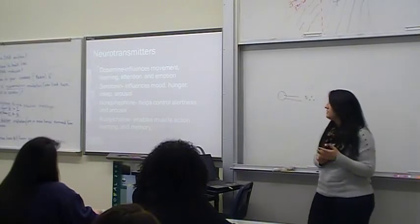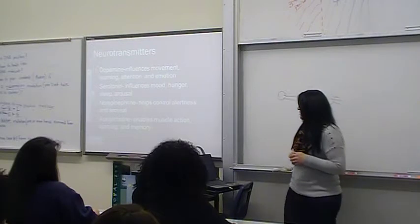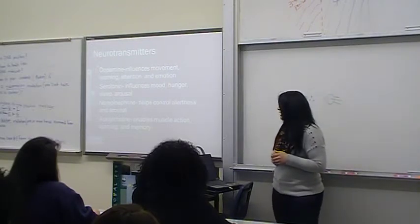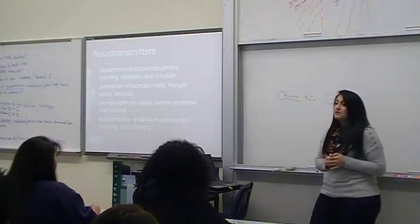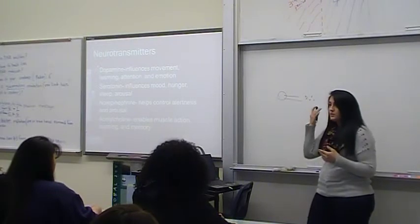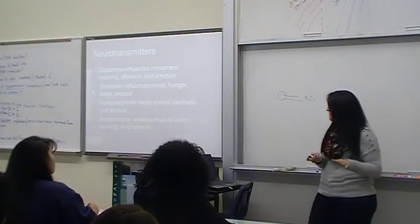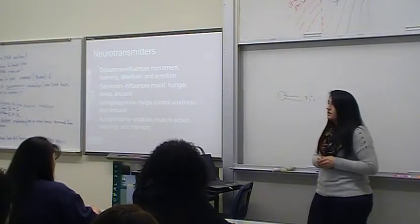Some of the neurotransmitters that are affected by heroin are dopamine, serotonin, norepinephrine, and acetylcholine. Dopamine influences movements that we don't really have control over. And with low levels of dopamine, we can have learning disabilities and muscle stiffness.